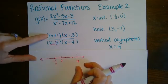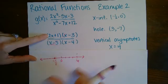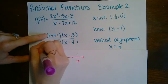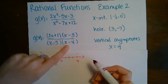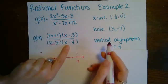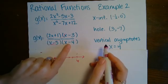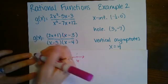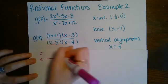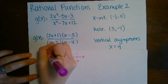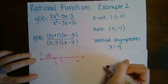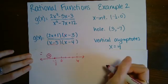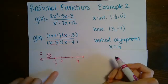For our test value of negative five: plugging into the first factor gives negative ten plus one, which is negative; plugging into the second factor gives negative five minus four, which is also negative. A negative divided by a negative is positive.